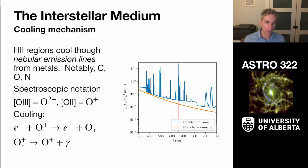And even though they are less abundant, things like carbon, nitrogen, and oxygen are really important for cooling off H2 regions and bringing their temperatures down.